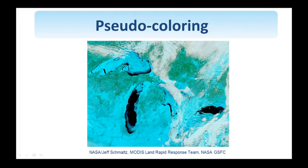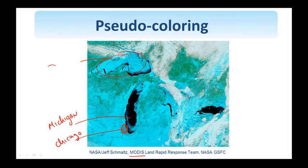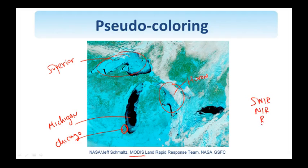We see here a beautiful pseudo-color image of the Great Lakes area taken by MODIS, which stands for Moderate Resolution Imaging Spectroradiometer, aboard the NASA Aqua satellite. Lake Michigan and Chicago are visible here, and Lake Superior is up here. For this false color image, a combination of short-wave infrared, near infrared, and the red channel were used. With this pseudo-coloring, we are able to distinguish ice from snow and water from clouds. Lake Superior is completely frozen — this was taken in the winter of 2014.